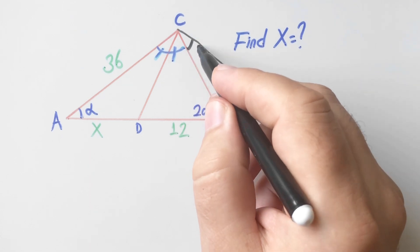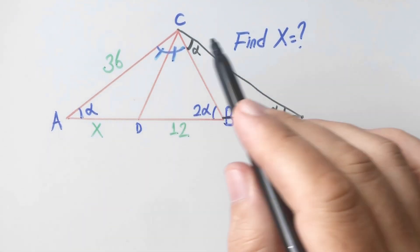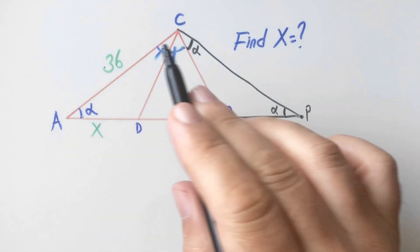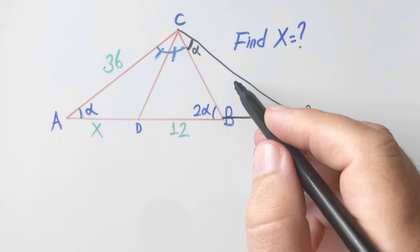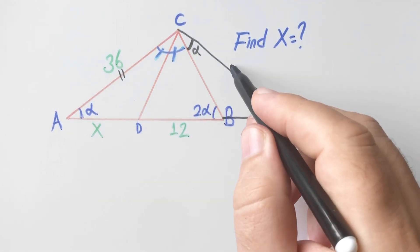If you focus on the biggest triangle, let's call this point P. ACP triangle is also an isosceles triangle, so this length and this length are equal.